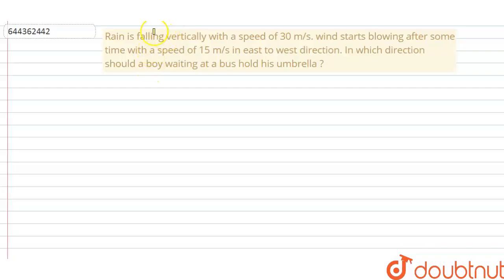Hello dear students, let us read what the question says. Rain is falling vertically with a speed of 30 meter per second. Wind starts blowing after some time with a speed of 15 meter per second in the east to west direction. In which direction should a boy waiting at the bus hold his umbrella?